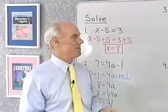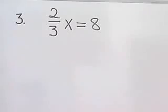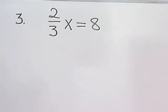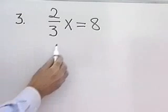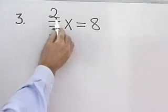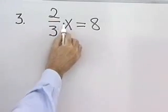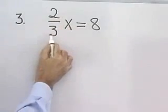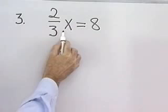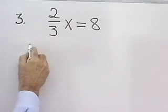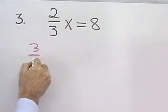Let's look at our third equation: 2 thirds x is equal to 8. I want to solve this for x. I notice that I have 2 thirds x on the left side and I want just 1x, so I'm going to multiply this left side by the reciprocal of the coefficient of x.